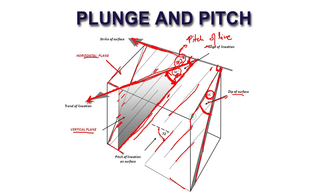Similarly, the dip amount of the surface is also measured on a vertical plane, but that vertical plane makes an angle of 90 degrees with the strike line. The vertical plane we made for this lineation makes a different angle — which we can't directly read from the diagram, since the 72-degree pitch is measured on the sloping surface, not on the horizontal surface.